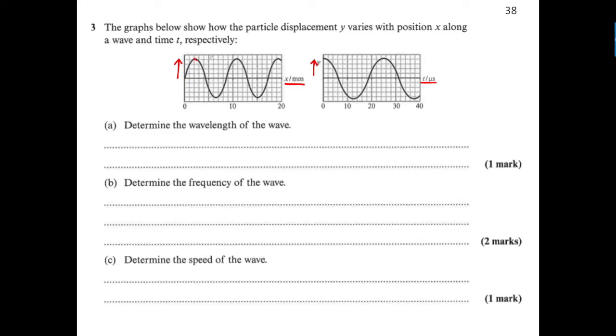You could measure from this peak to this peak and get about eight, but it's best to measure across as many waves as possible. Go from here - one wavelength and another wavelength - about 17 mm. That's two wavelengths, so divide by two: 8.5 mm.